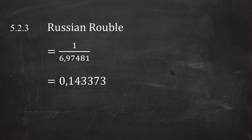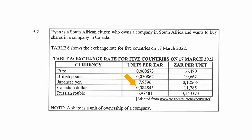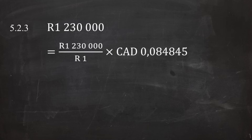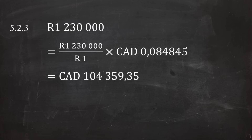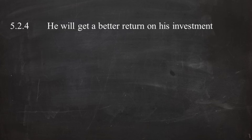In question 5.2.3, Ryan decides to invest R1,230,000 in shares in a Canadian company. Since 1 Rand equals 0.084845 Canadian dollars, R1,230,000 multiplied by 0.084845 gives an amount of 104,359.35 Canadian dollars. In question 5.2.4, one reason to motivate Ryan to invest in a Canadian company is that the Canadian currency is stronger, and therefore he will get a better return on his investment.